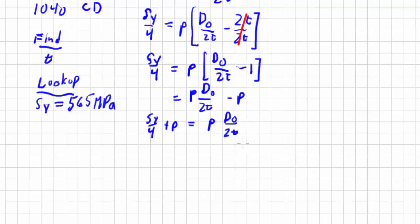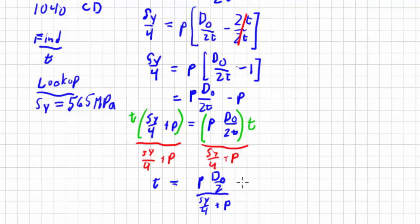Okay, now I just need to solve for t. I'm going to multiply both sides by t. And divide both sides by sy over 4 plus p. So I get rid of this. And I get t equals pd over 2 all over sy over 4 plus p. And now I can plug things in.